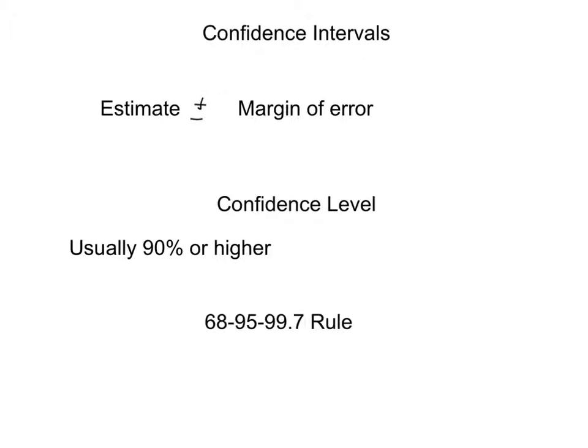One of the first things with inference is confidence intervals. In daily life, we have confidence intervals all the time with people trying to predict polls, the percentage of voters that will vote for one candidate versus another. Really what a confidence interval is, is the estimate plus and minus the margin of error. If you've taken a science class, it's kind of like the percent error.